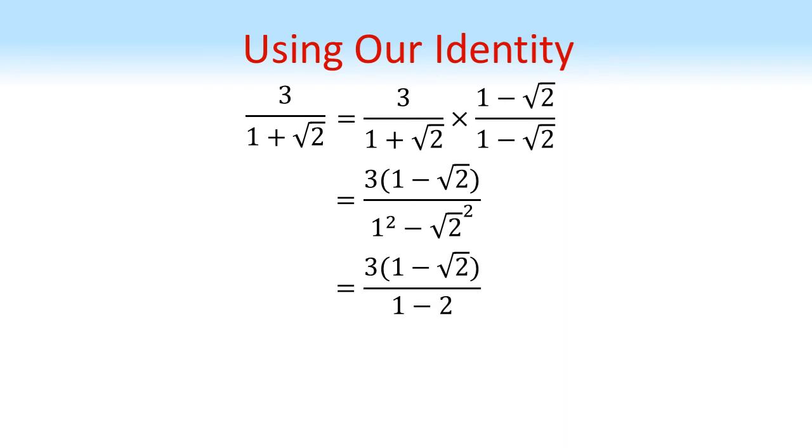The denominator is 1 minus 2, which is minus 1, and then simplifying our fraction gives us 3 lots of root 2 minus 1. We no longer have an irrational denominator.